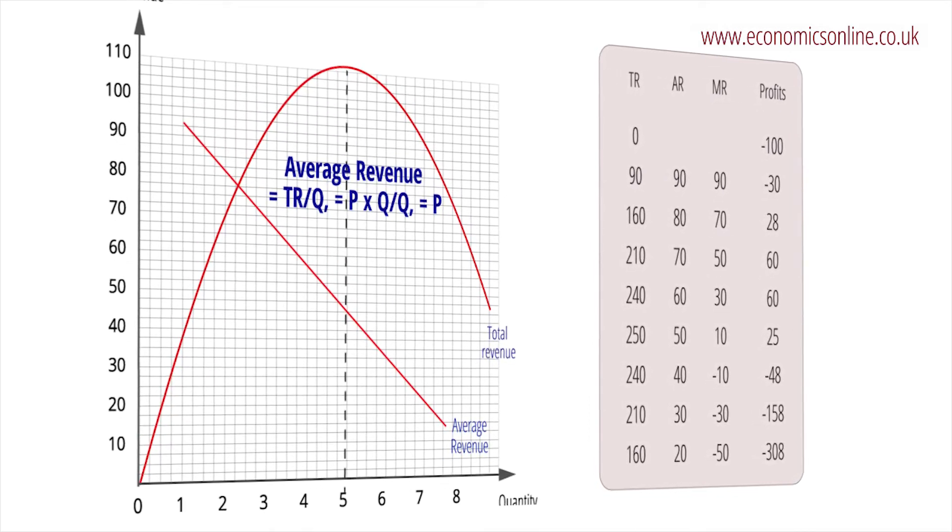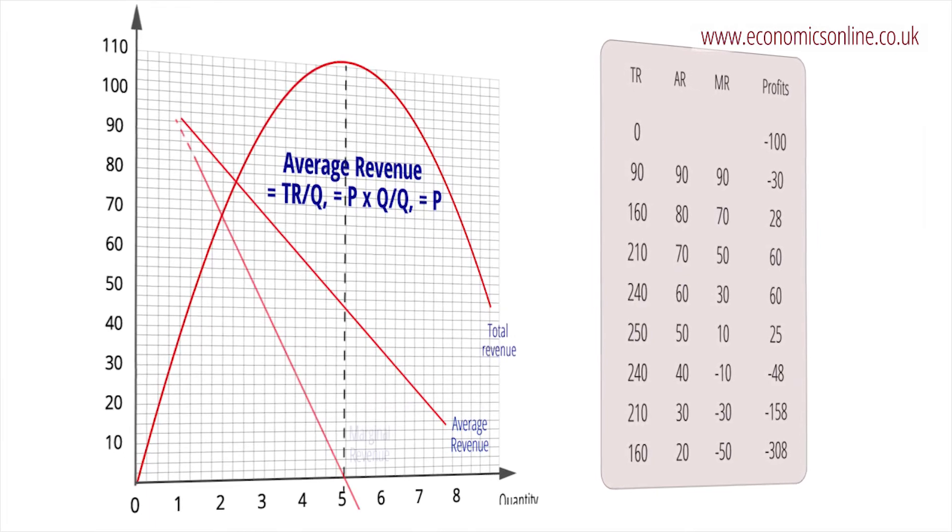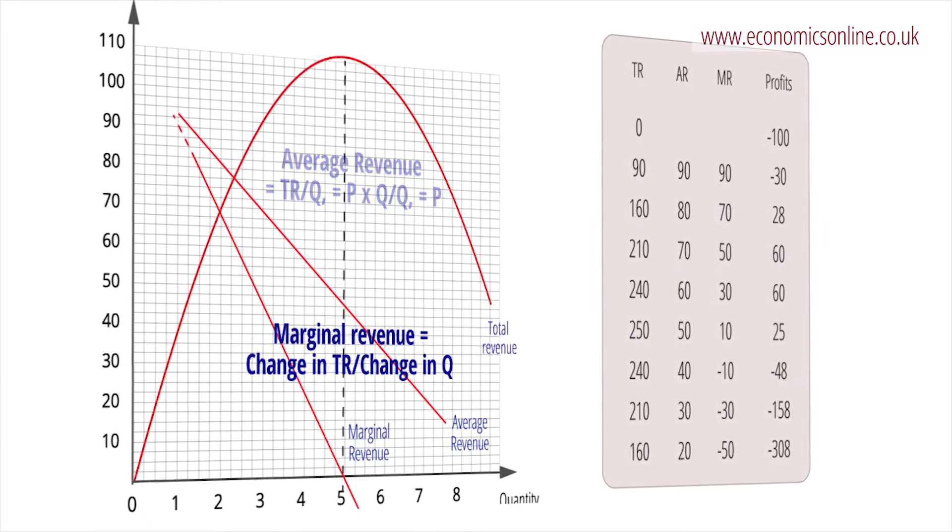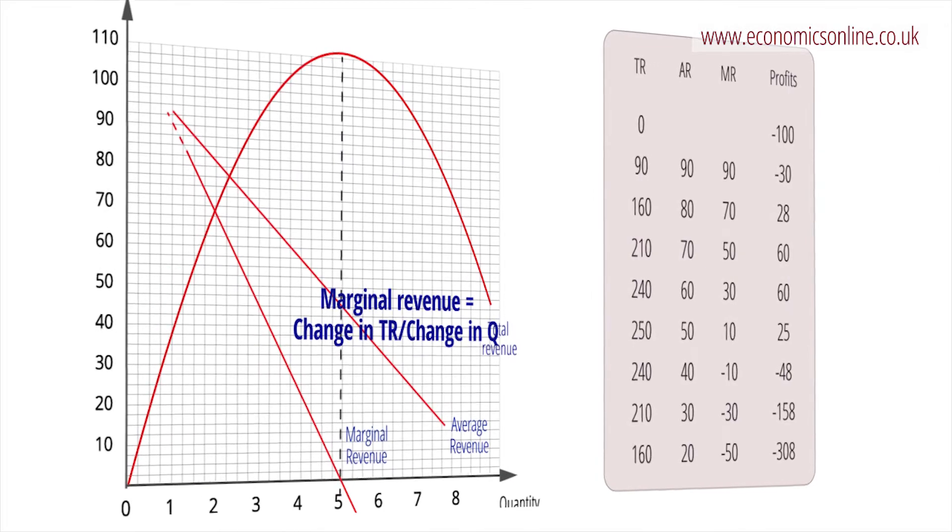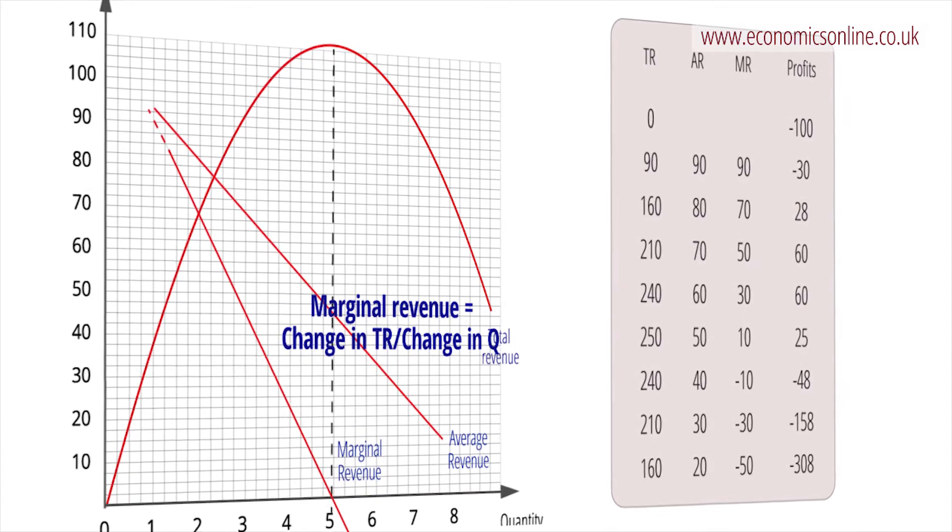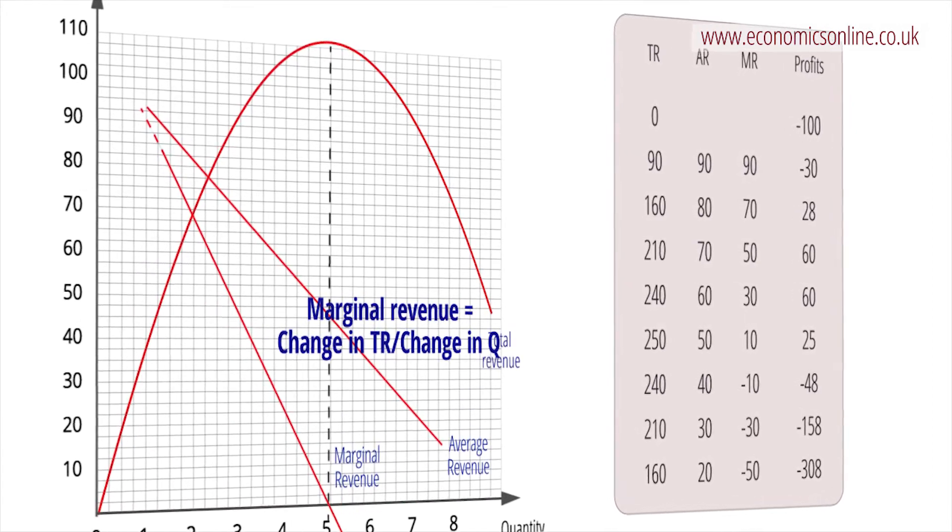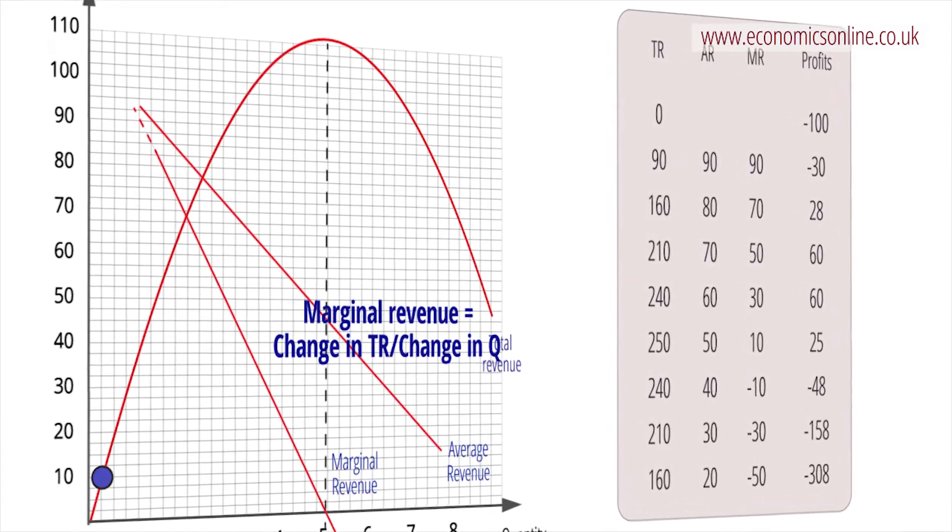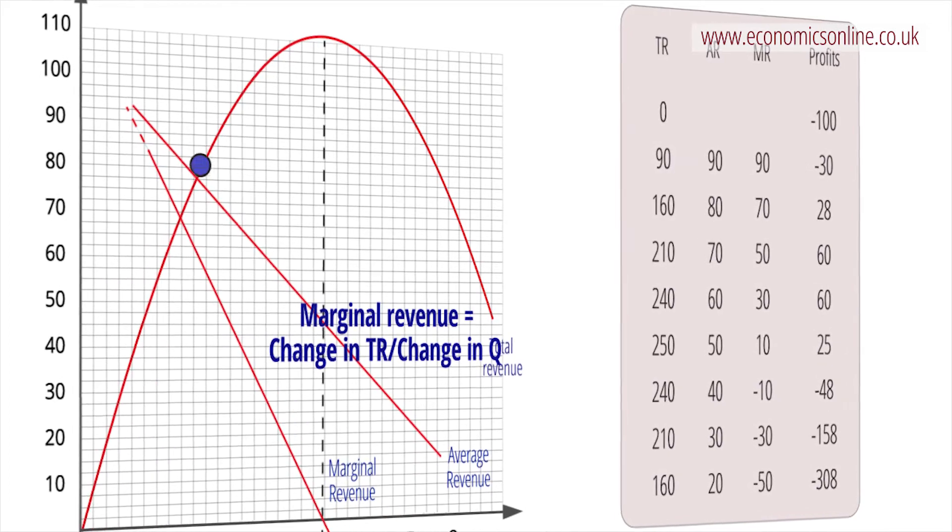Marginal revenue is the revenue generated from selling one extra unit of a good or service. Assuming P and Q are inversely related, initially total revenue increases with output, but at a decreasing rate, eventually reaching a maximum and then decreasing to become negative.